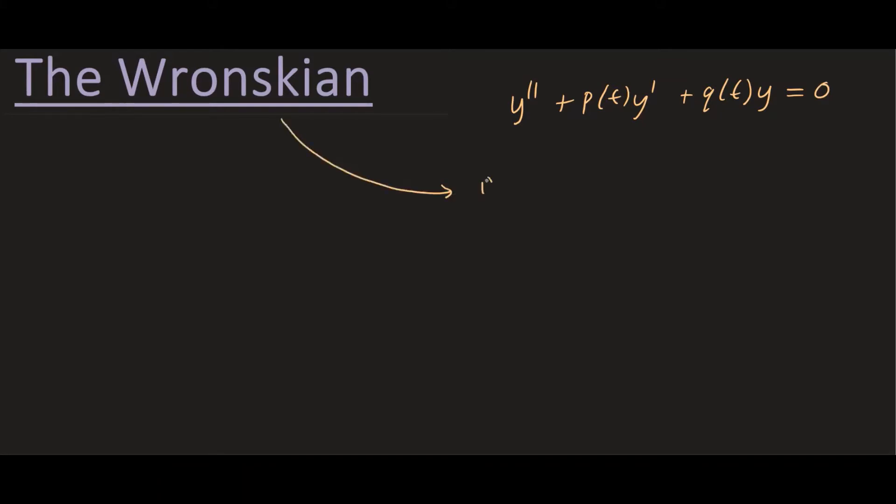Say we have two solutions y1 and y2. Then if the Wronskian of the two solutions y1 and y2 is non-zero, then we know that y1 and y2 form a fundamental set of solutions. What that really means is that you can have all the possible solutions out there with the linear combination of y1 and y2. So very powerful statement.